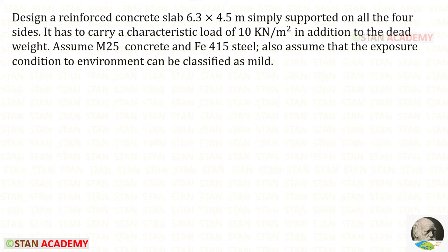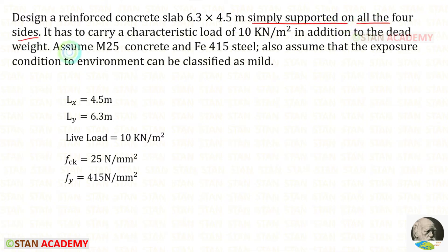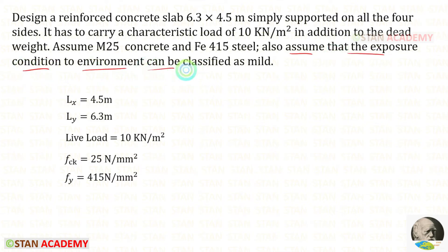Hello everyone. Today we are going to design a simply supported two-way slab. Let us read the question and write the given data. Design a reinforced concrete slab 6.3 by 4.5 meters. The longer span is taken as Ly and the shorter span as Lx. It is simply supported on all four sides, carrying a characteristic live load of 10 kN/m². Assume M25 concrete and Fe 415 steel; FCK is 25, FY is 415. The exposure condition is classified as mild.